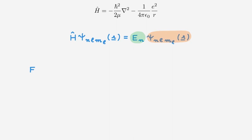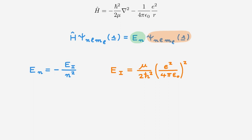In our mathematical solution, we found that the energy eigenvalues En are given by minus Ei over N squared. Ei is called the ionization energy and is given by an expression in terms of the reduced mass of the proton-electron system and some fundamental physical constants. Its numerical value is about 13.6 electron volts. Additionally, the quantum number N, called the principal quantum number, can only take positive integer values and labels the different energy eigenvalues of hydrogen. Do check out the videos linked in the description for the full details behind these expressions.